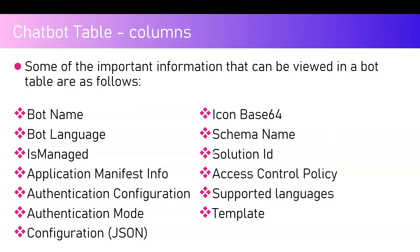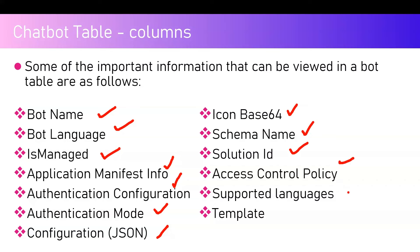Some important information viewable in the bot table includes: bot name, bot language, whether it's a managed bot, application manifest info, authentication configuration, authentication mode, configuration in JSON format, icon of the bot in Base64, schema name, solution ID, access control policy, supported languages, and templates.